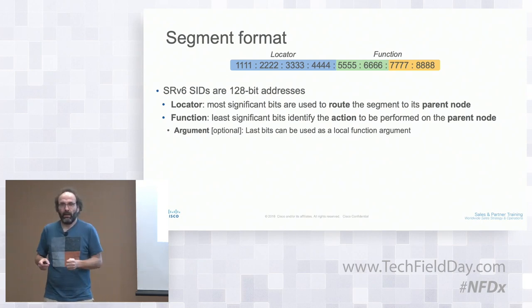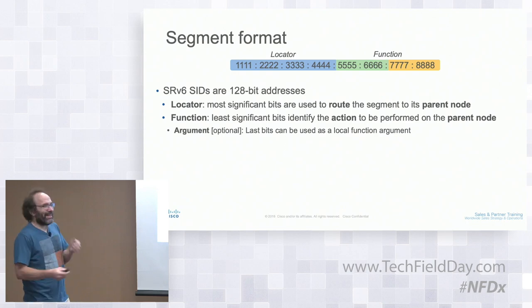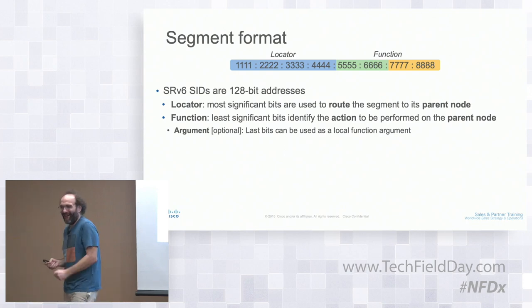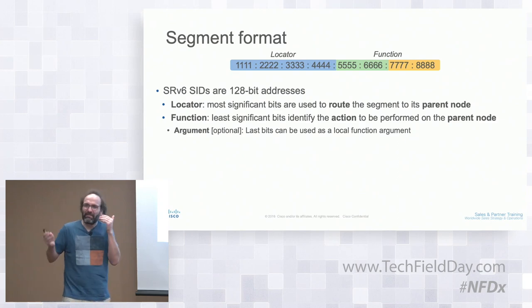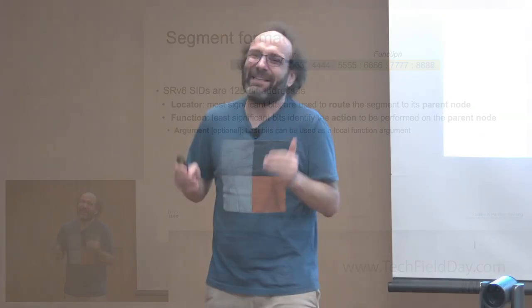An audience member notes the similarity to LISP. The speaker clarifies: SRV6 is not LISP—it doesn't cover signaling, only forwarding. The function is an abstraction of anything; the control plane uses IGP, BGP, or a controller. While networking concepts do repeat, this is fundamentally different.